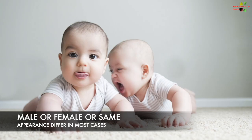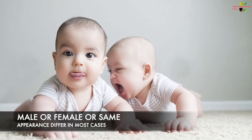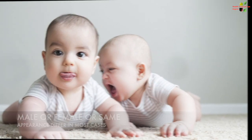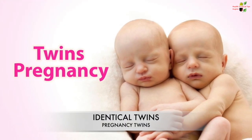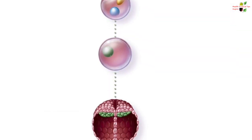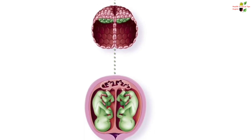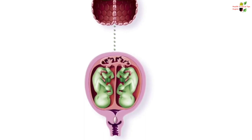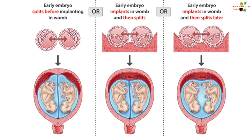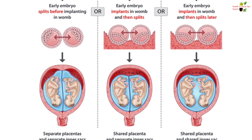The appearance of fraternal twins is quite different, however in some cases they may look the same as well. Now let's talk about the identical twins. In identical twins, only one ovum is fertilized by one sperm, and when this fertilized egg implants in the womb, the way it implants itself gives us three categories of identical twins.